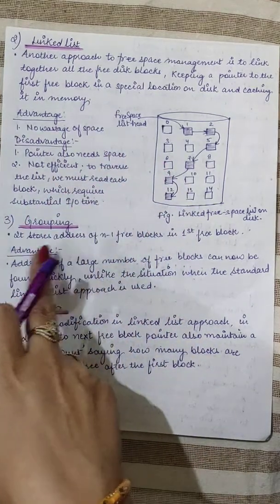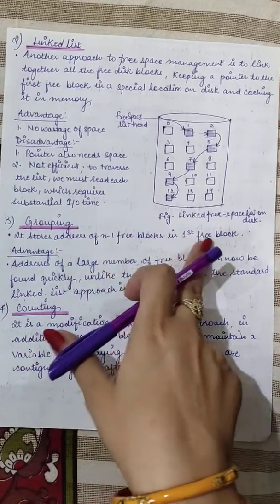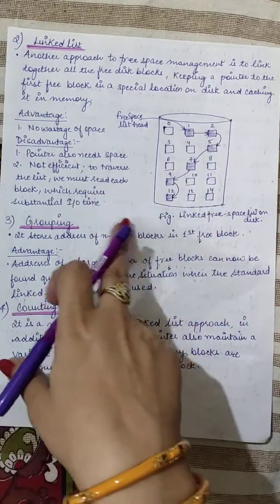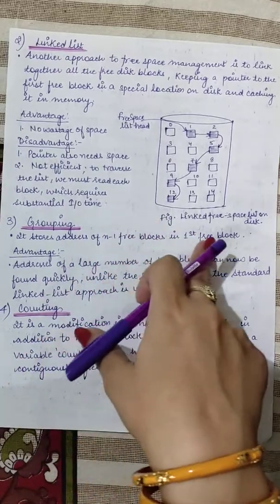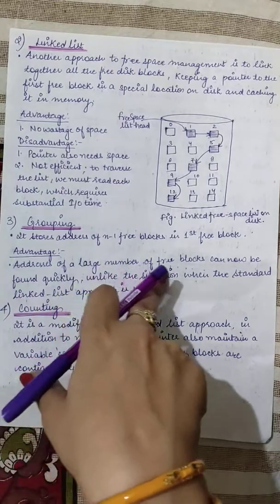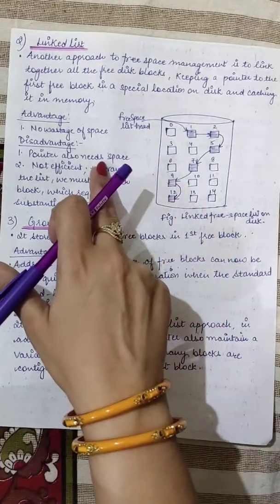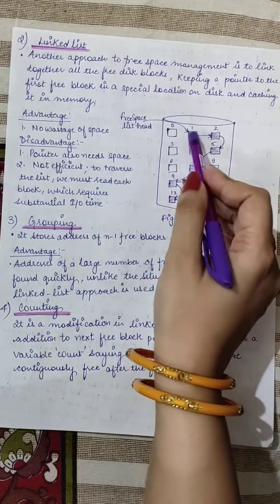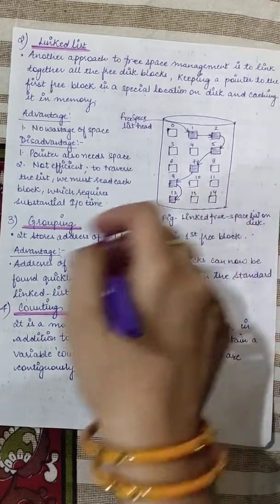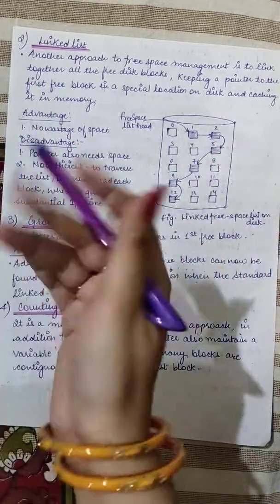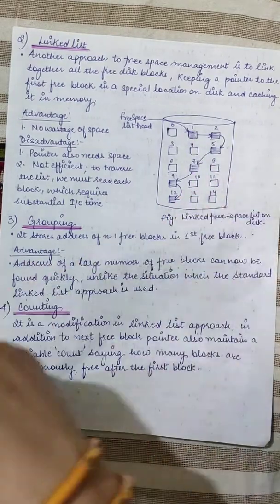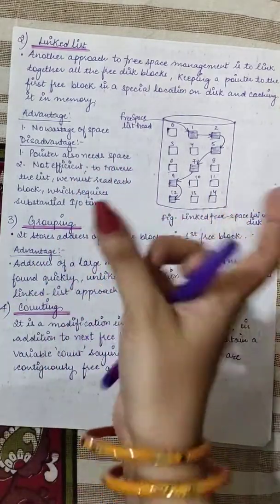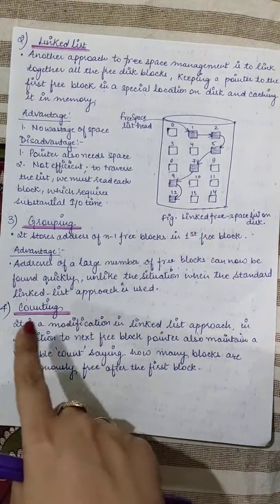Then we have the grouping technique. It stores the addresses of n-1 free blocks in the first free block. Unlike the linked list where one block points to the next free block, here the first block contains links to all other free blocks — one is connected to two, five, seven, nine, and twelve. So the head element connects to all other free blocks directly. The advantage is that a large number of free block addresses can be found quickly, making it better than the standard linked list approach.